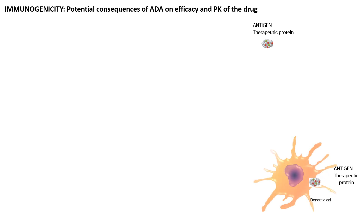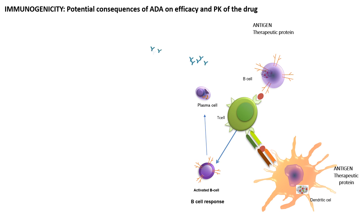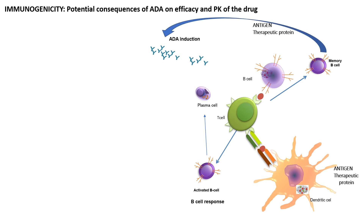The therapeutic protein can be identified by the dendritic cell, or a B cell can also work as an antigen-presenting cell that activates the T cell. The T cell orchestrates this response. With the appropriate costimulatory factors, the T cell activates B cells, which produce plasma cells that end up producing antibodies — that's anti-drug antibody induction. T cells also drive the response for memory B cells that maintain that anti-drug antibody production in the individual.